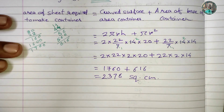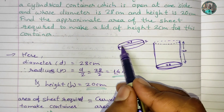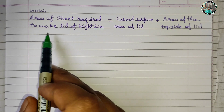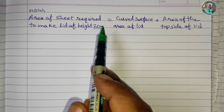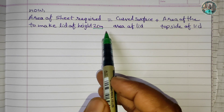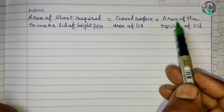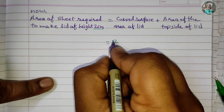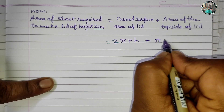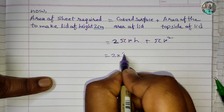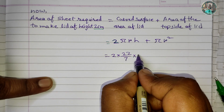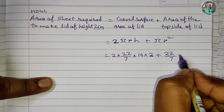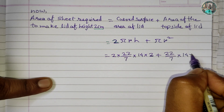Now for the area of the sheet required to make the lid of height 2 cm. The formula for the area of the lead is: curved surface area plus the area of the top circle. That is 2πrh plus πr², where r = 14 and h = 2 cm. So: 2 × (22/7) × 14 × 2 plus (22/7) × 14².